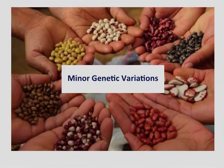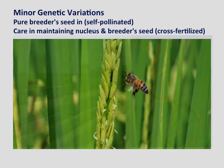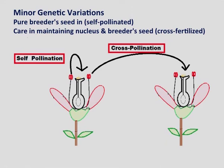Contamination by natural crossing can be prevented by adoption of precautions against cross-pollination. Minor genetic variations can occur even in varieties appearing phenotypically uniform and homogenous when released. These variations may be lost during later production cycles owing to selective elimination by nature. The use of pure breeder seeds in self-pollinated crop varieties can overcome these minor variations. Due care during the maintenance of nucleus and breeder seeds of open-fertilized crop varieties is necessary to avoid minor genetic variations.